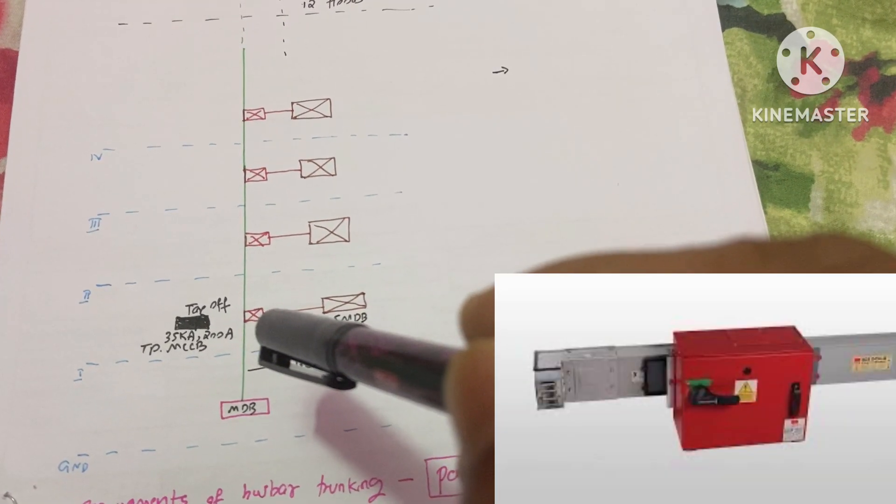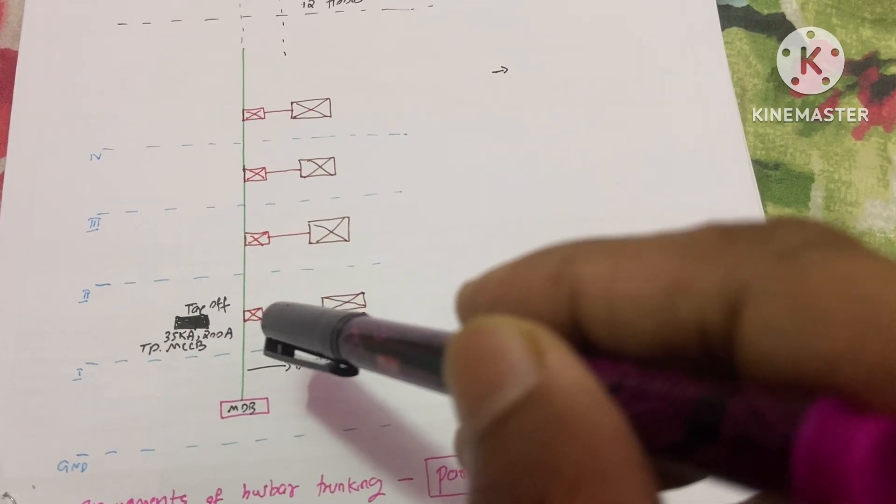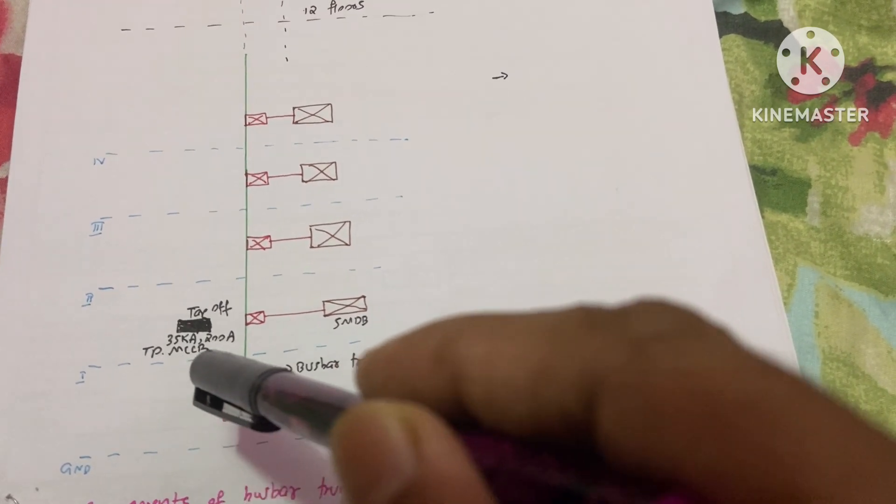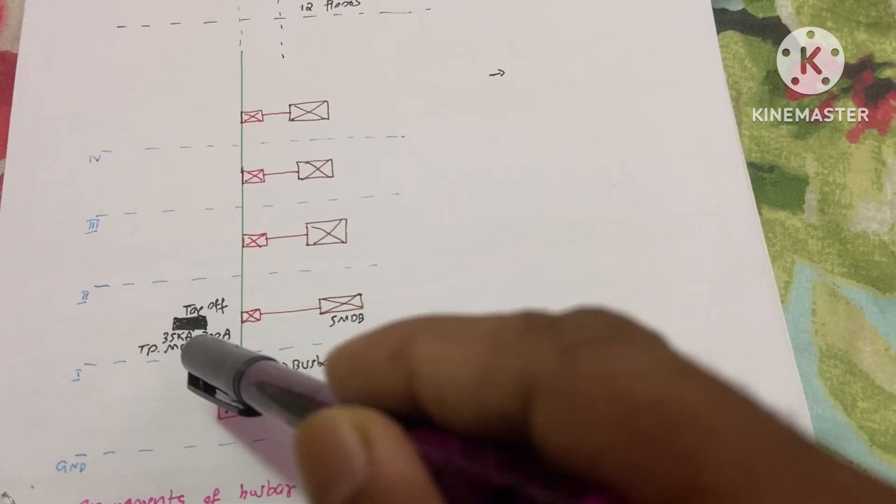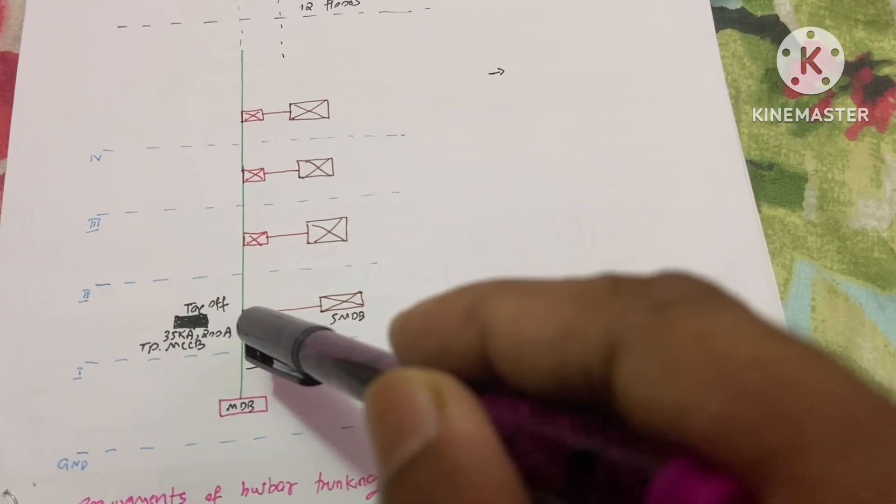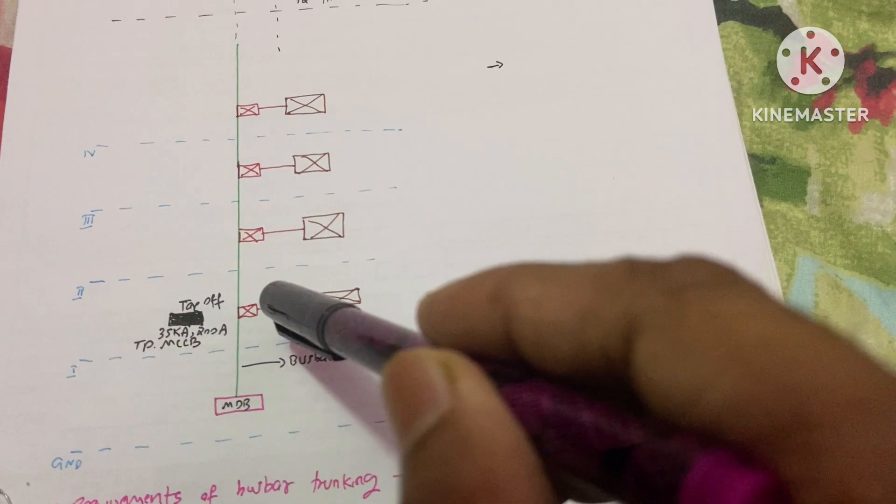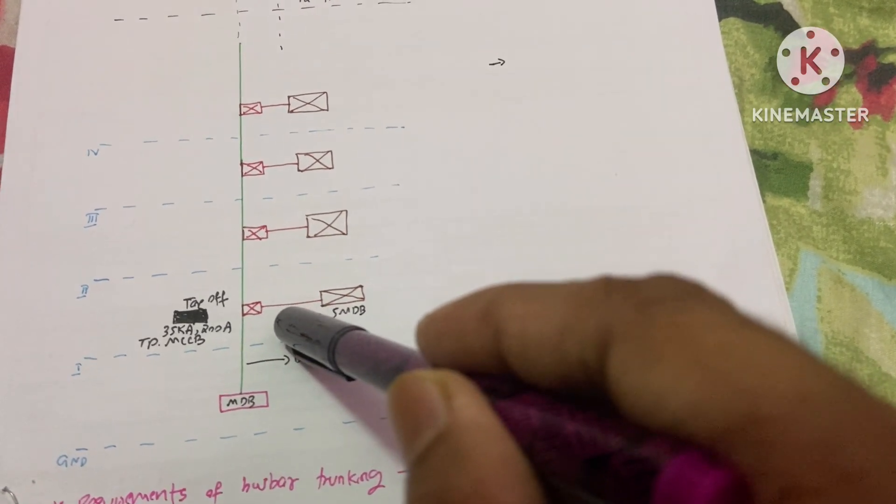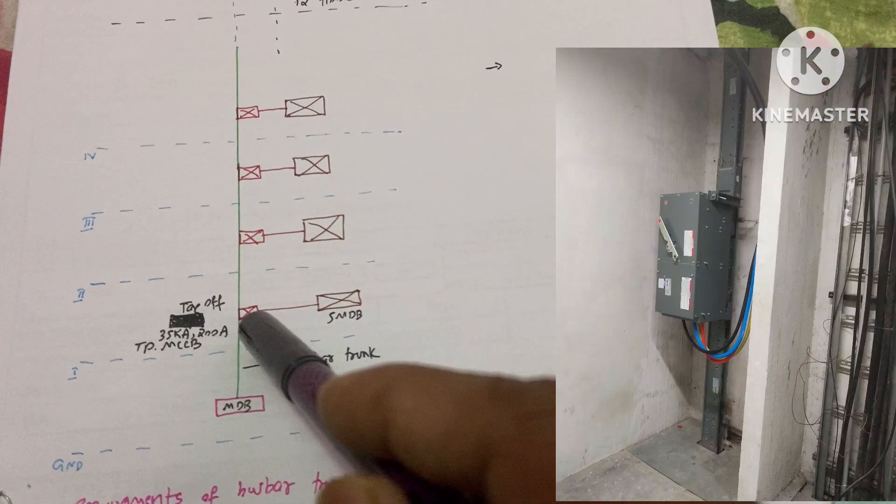This tap-off unit contains an MCCB. Here, for example, I gave a specification of MCCB as triple-pole MCCB with 35 kiloamp short circuit rating and its load rating is 200 ampere. It's just an example. The mounting height of this tap-off unit is 50 to 160 cm from the FFL. After this tap-off, you can run a cable from the tap-off unit to the sub-distribution board.